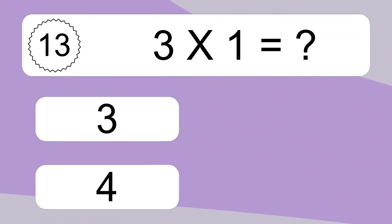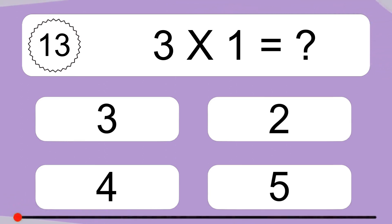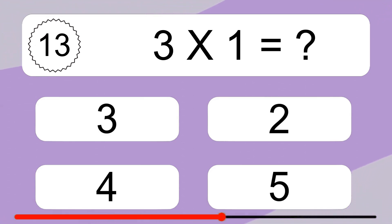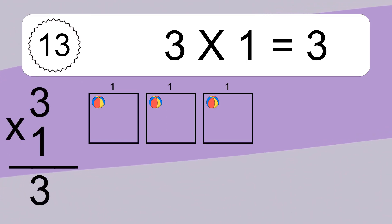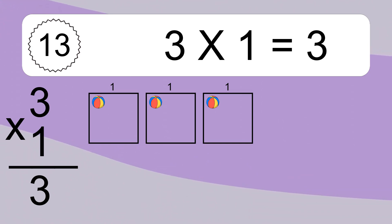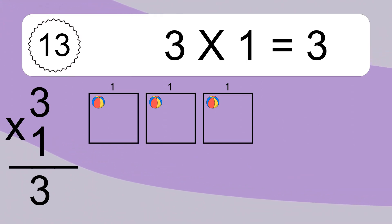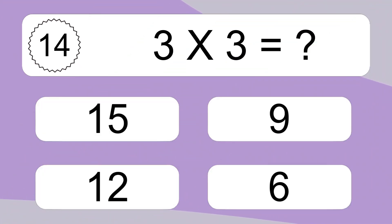6 times 1 equals what? 3 times 1 equals 3. We have 3 boxes, and each box has 1 colorful ball inside. If you count all the balls in all the boxes together, you will have 3 times 1 balls. This equals 3 balls.